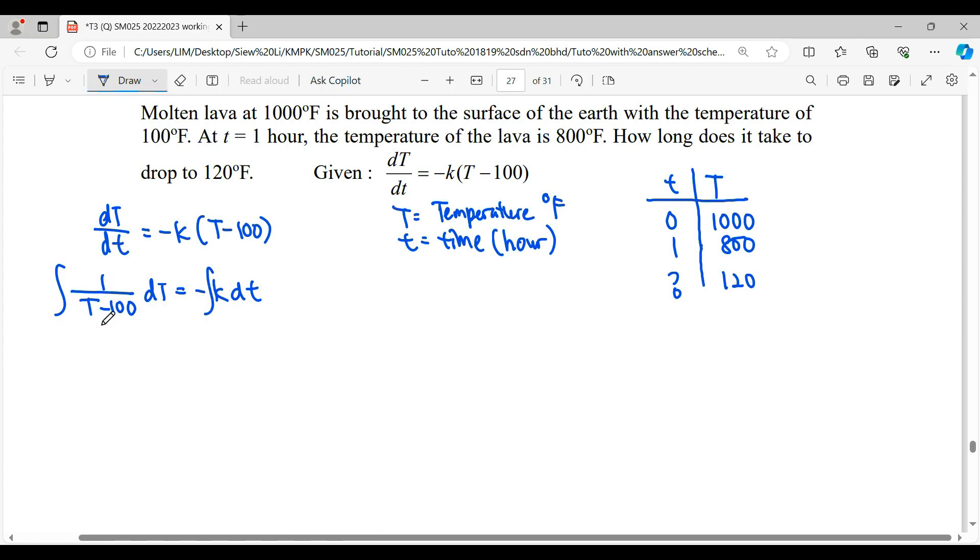Integrate fraction when it is linear, it gives us ln. Don't forget, divide by the coefficient 1. When you divide by coefficient 1, it doesn't make the answer change. So remain as ln(T minus 100). Then integrate K with respect to t, it will be Kt plus constant C.